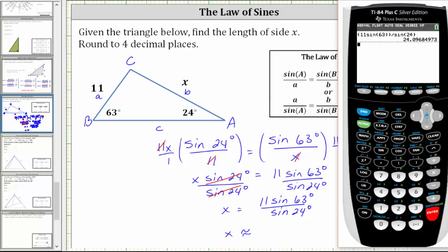And enter. Notice how there is a four in the fifth decimal place, and therefore we round down when rounding to four decimal places. This rounds to 24.0968 units.